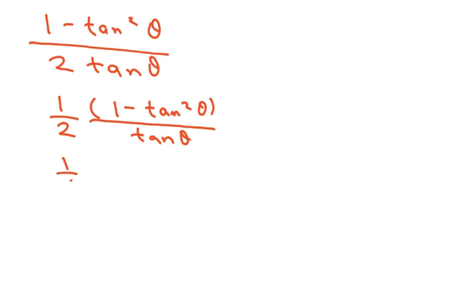And then I'm going to write this as 1 half. And I'm going to put the tan under each piece. Because you remember I want cotan. So I have 1 over tan of theta minus tan squared of theta over tan.